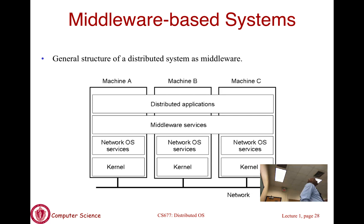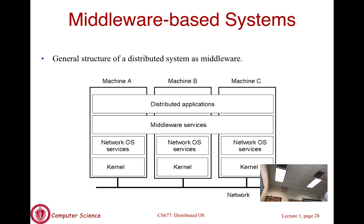Then we have the middleware-based operating system. The middleware-based OS essentially takes a network operating system and adds a software layer on top, presenting abstraction similar to the distributed OS. So you can take any network OS, add a software layer, and make it look to the applications as if they are running on a distributed OS-like system.